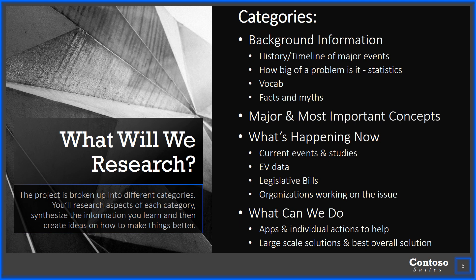What exactly are you going to research? It's broken up into a few different categories. You're going to need to teach the class about your topic, starting with some background information — look at the history, a timeline of major events or changes related to your topic, and statistics. How many people does this affect in Minnesota, maybe even in Dakota County, in our country, and globally? You're looking for multiple statistics — probably four to six significant ones — to paint a picture of how many people are affected and who: certain genders, races, socioeconomic statuses, age groups.